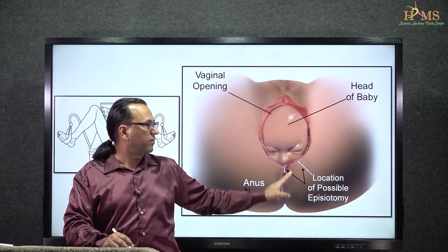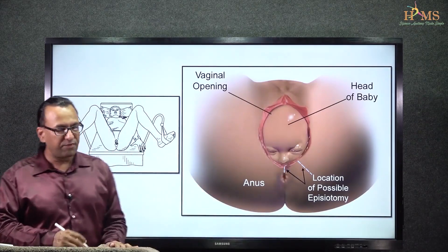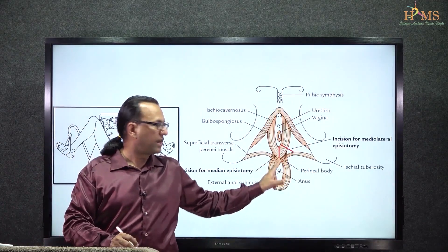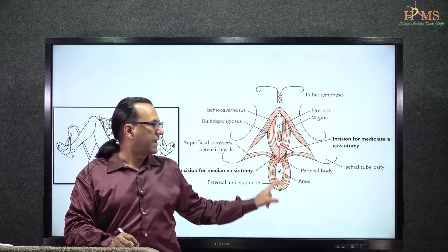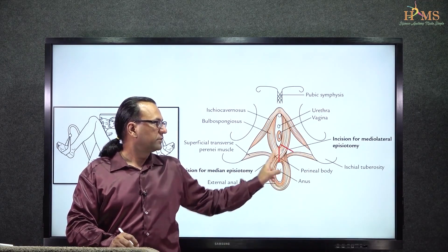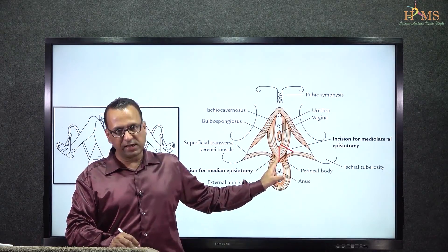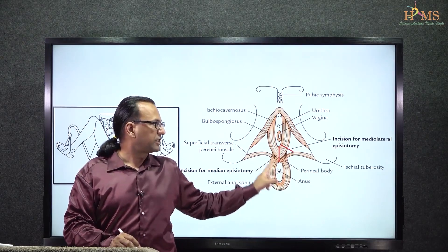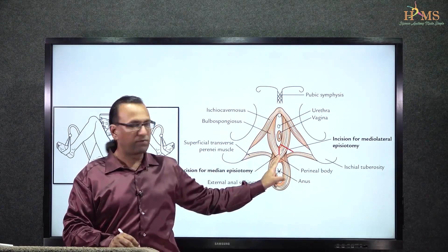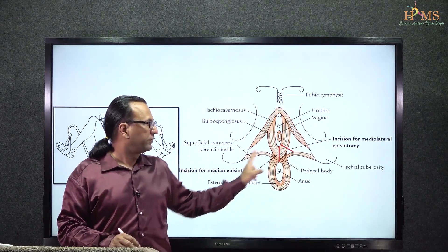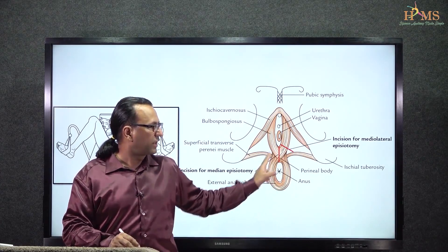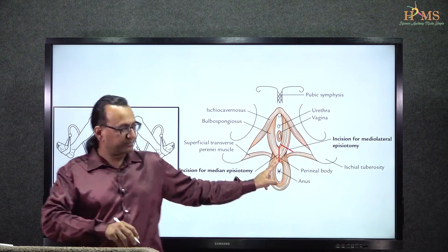Let us look at some of the muscles in this region before we comment upon the answer. We will find that there is a perineal body lying between the anus posteriorly and the vagina anteriorly. This perineal body is a central perineal tendon where many muscles insert — bulbospongiousus around the bulb of vagina, the superficial transverse perineal muscle, and the external anal sphincter.